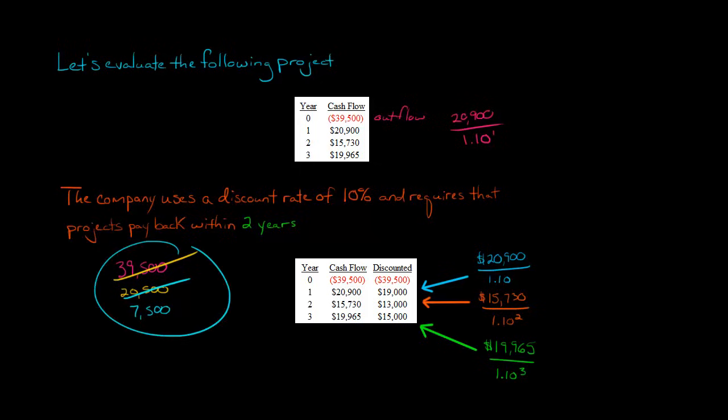If you're wondering what these numbers are, I'm starting with the amount $39,500, the initial investment, and then saying, okay, we received $19,000 in the first year after discounting it. So then that brings us down to $20,500 to be repaid. And then after we get $13,000 discounted in year two, we have $7,500 left to be repaid. That's $20,500 minus the $13,000 is $7,500.